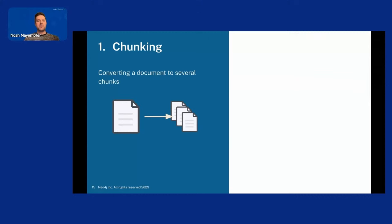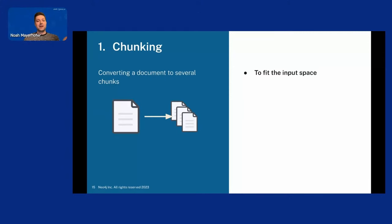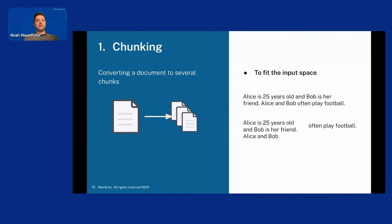First, chunking. Chunking is the process of converting a document into several chunks. Since we have text input, we want to split the text into pieces. We do this to fit the LLM's input size limit. You could split after a set number of characters, but this can cause problems. Consider: 'Alice is 25 years old and Bob is her friend. Alice and Bob often play football.' If we split after a set amount of characters, the second chunk could be 'often play football' — which doesn't make any sense. Who often plays football?